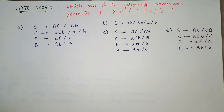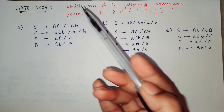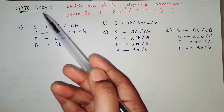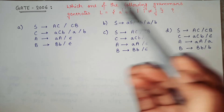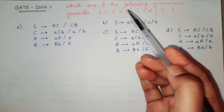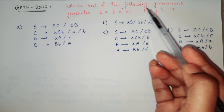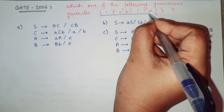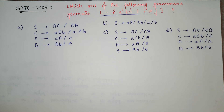Without wasting much time, let's get into the question. This question was asked in GATE 2006: 'Which one of the following grammars generates L = a^i b^j such that i is not equal to j?' They have given four different grammars in the options and are asking which one generates this language.